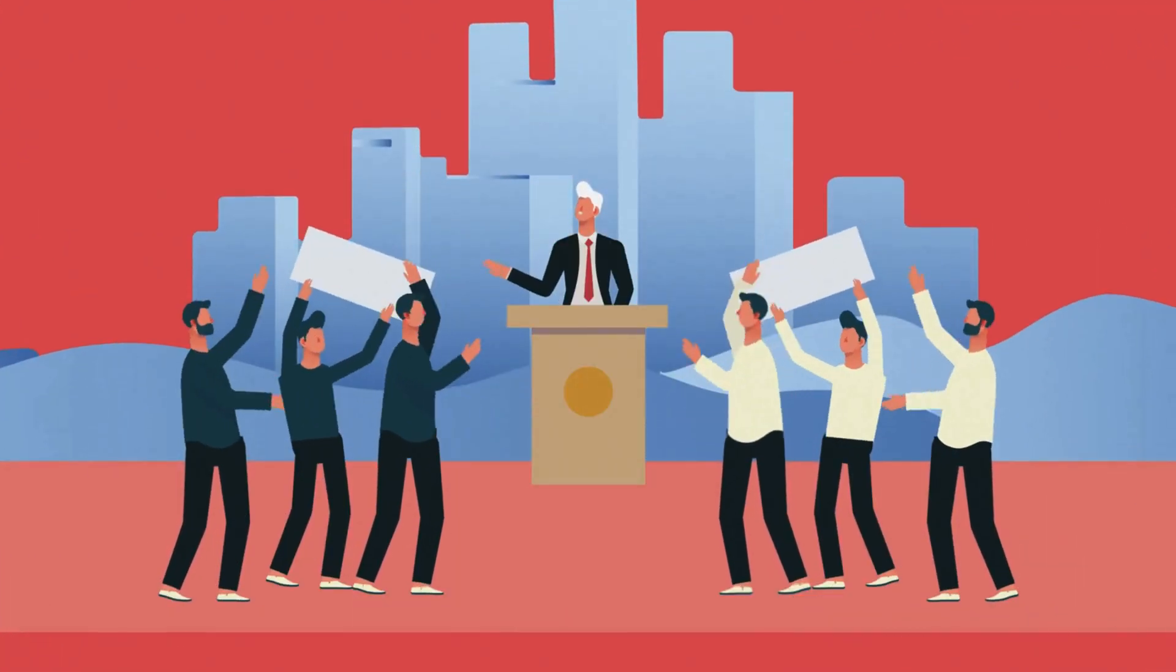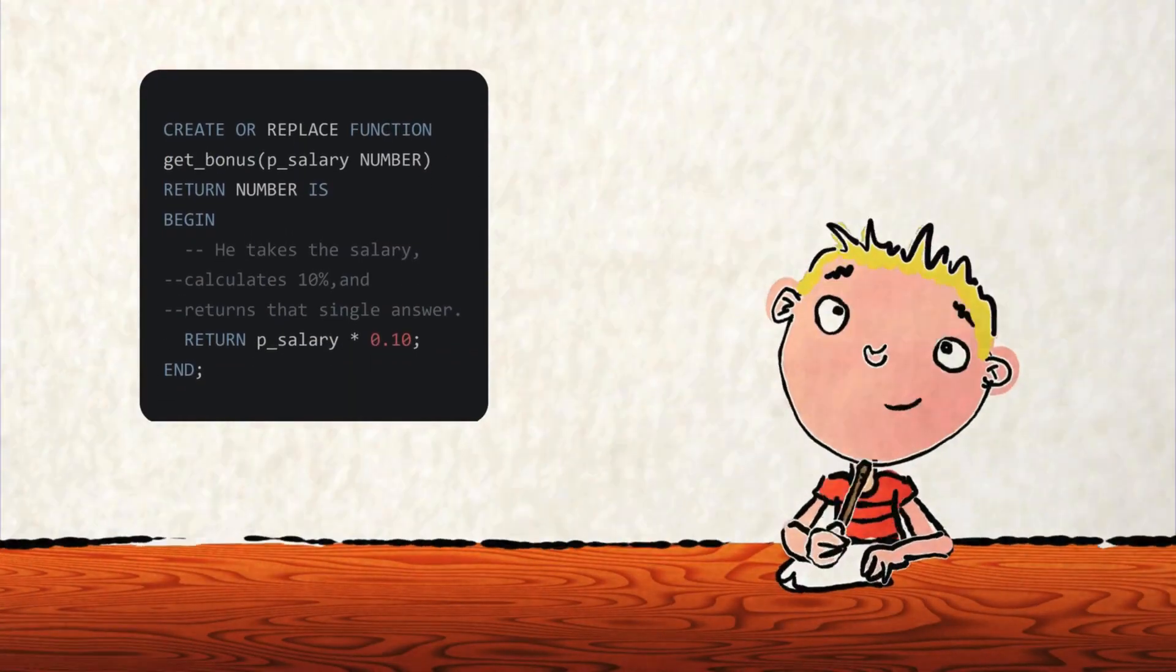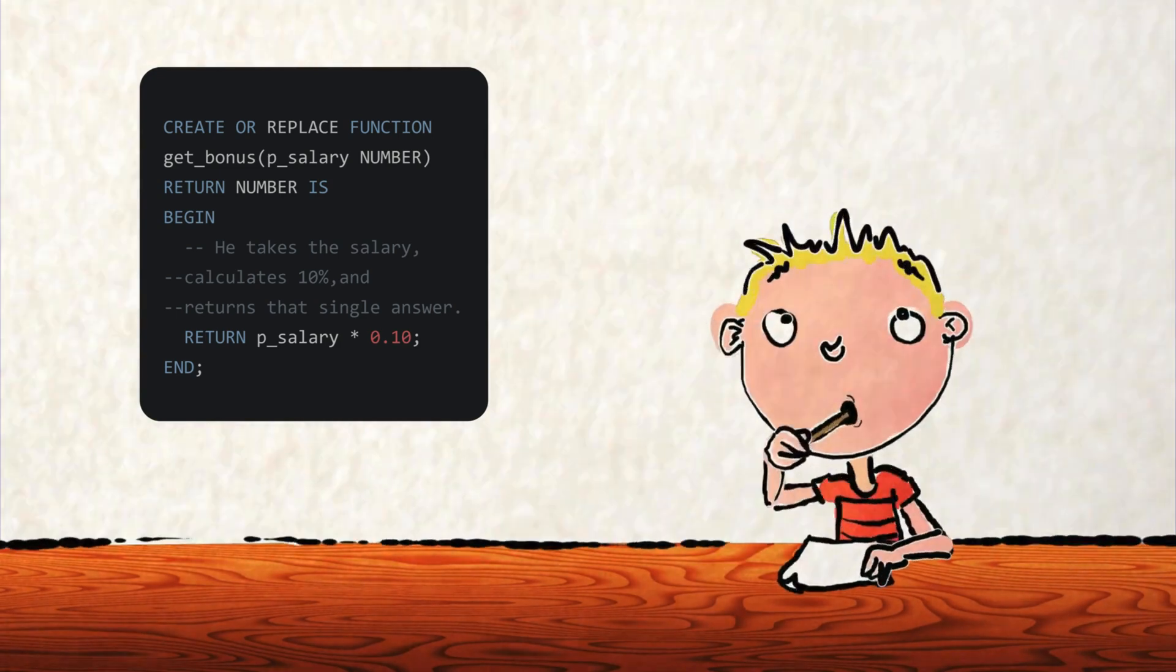Function was known as the one-answer guy because whenever someone asked him a question like what is 10% of my salary, he would carefully think, perform his calculation, and confidently give exactly one answer.